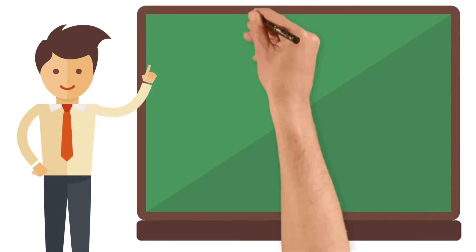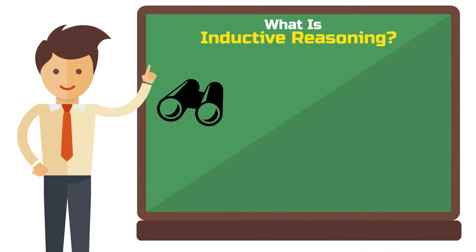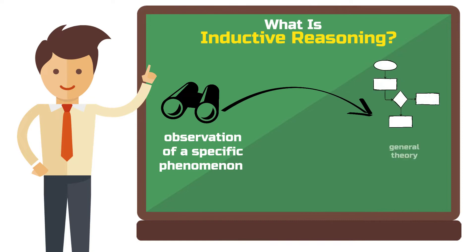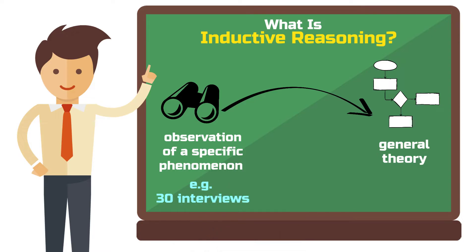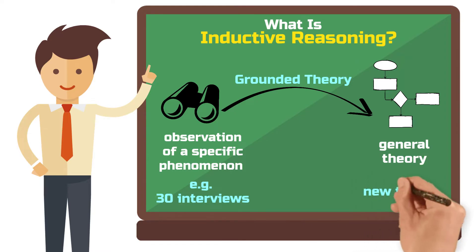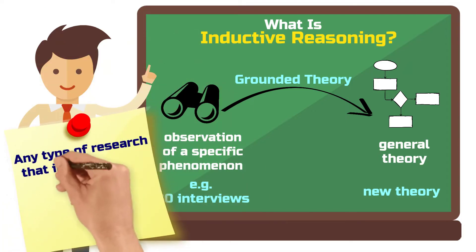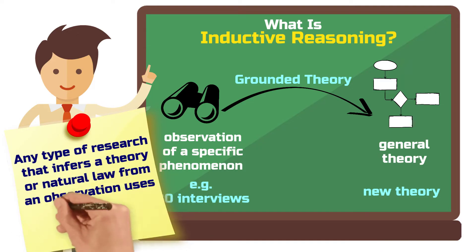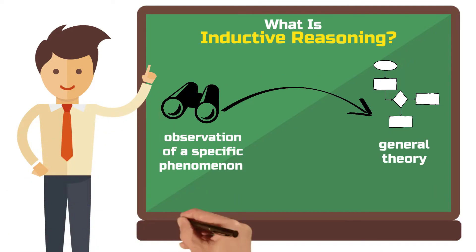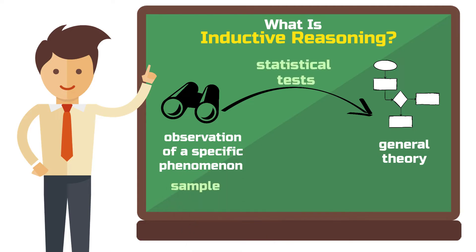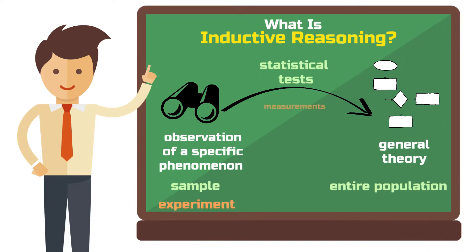In science, inductive reasoning involves deriving a general theory from the observation of a specific phenomenon. For instance, consider an interview study in which you conduct 30 interviews and then use grounded theory to analyze them — this will lead to new theory. Induction isn't limited to qualitative research, however. Any research that draws conclusions about a theory or natural law from observations employs some sort of induction, including statistical calculations or a physicist making repeated measurements from which she derives a natural law.